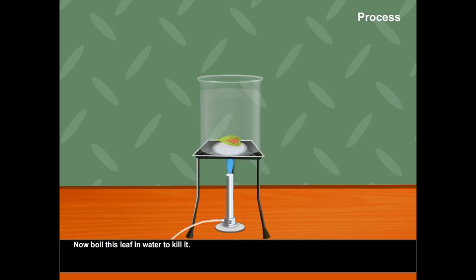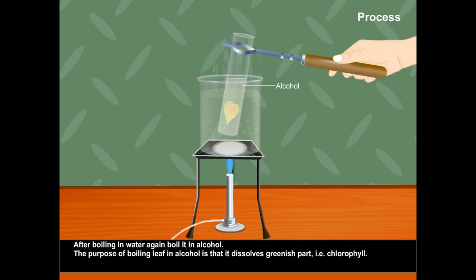Now, boil this leaf in water to kill it. After boiling in water, again boil it in alcohol. The purpose of boiling leaf in alcohol is that it dissolves greenish part, i.e. chlorophyll.